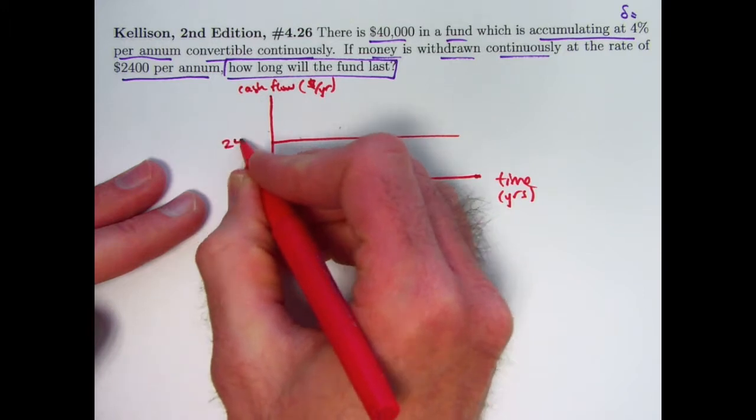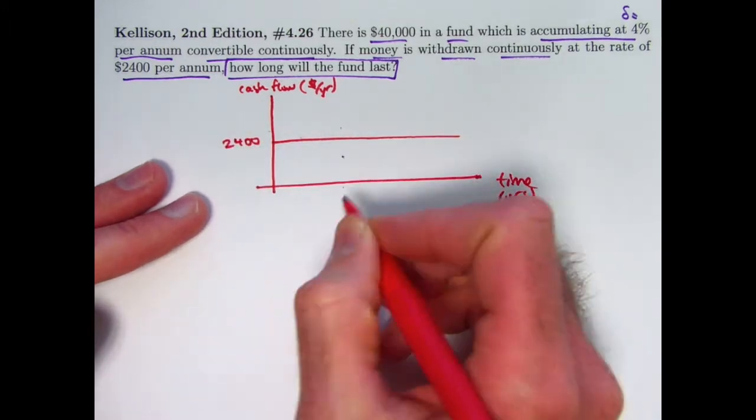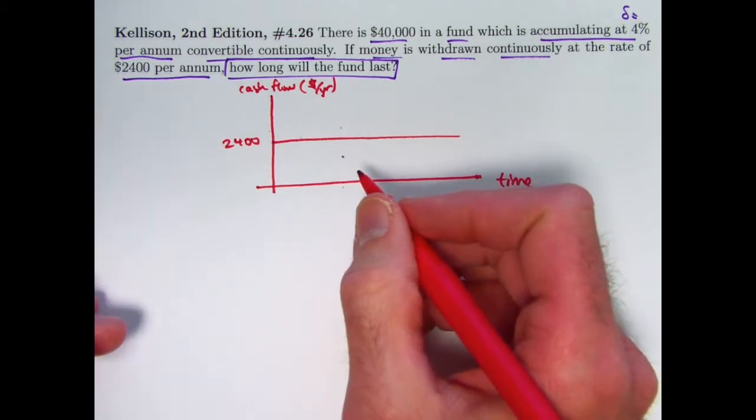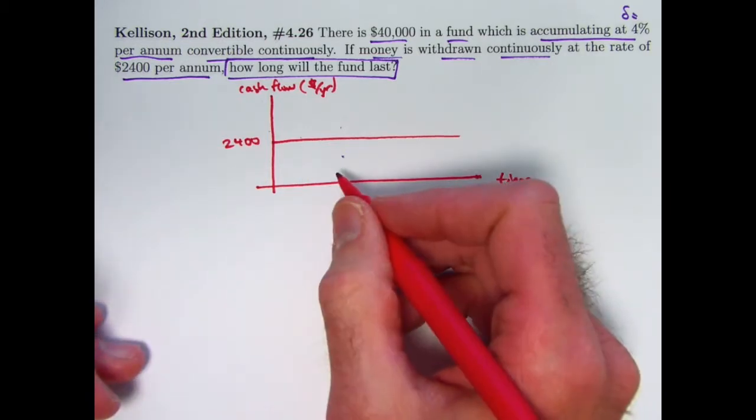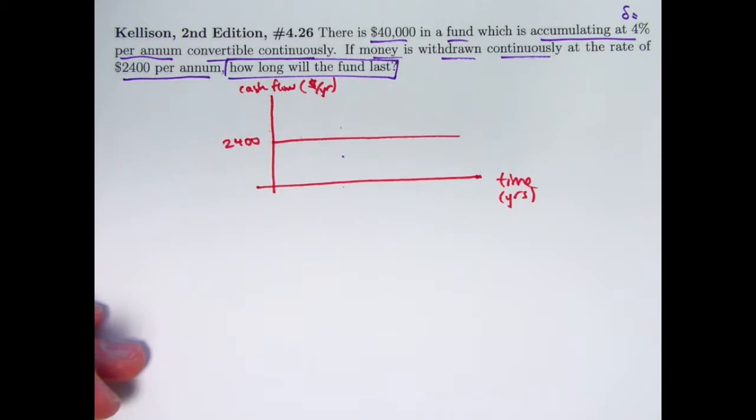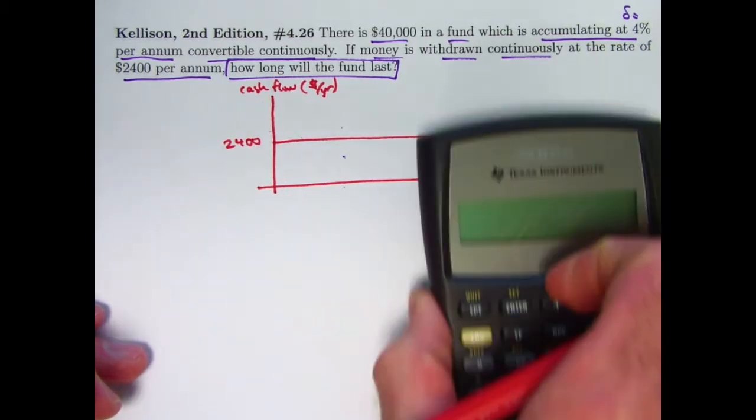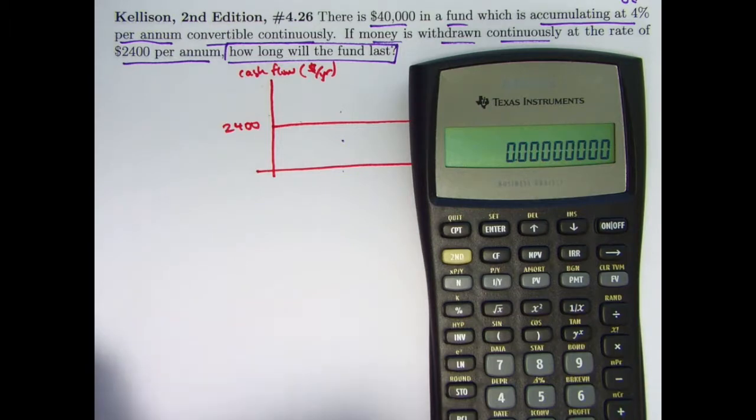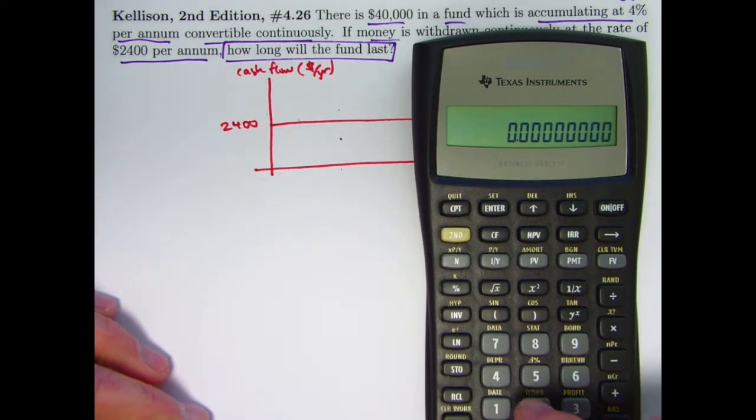If I graph a horizontal line at $2,400, that doesn't mean $2,400 is being paid out at any one moment in time, but continuously, in such a way that over the course of any given year, you get paid $2,400. What would that mean in terms of money per day, or hour, or minute? Well, let's think about that.